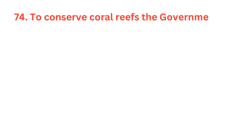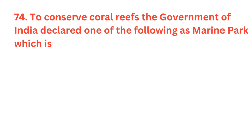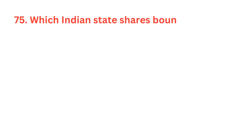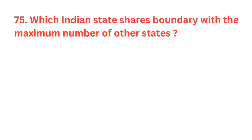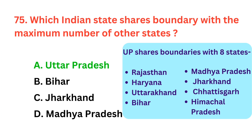To conserve coral reefs, the government of India declared one of the following as a marine park. Which is it? The correct answer is option A, Gulf of Kutch. Which Indian state shares boundary with the maximum number of other states? The correct answer is option A, Uttar Pradesh.